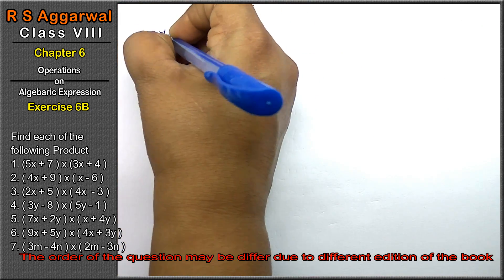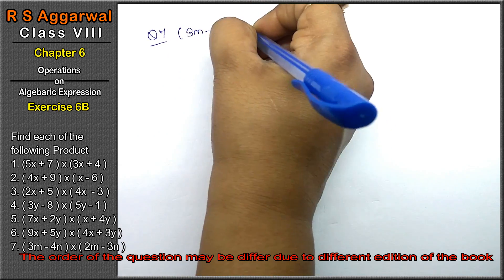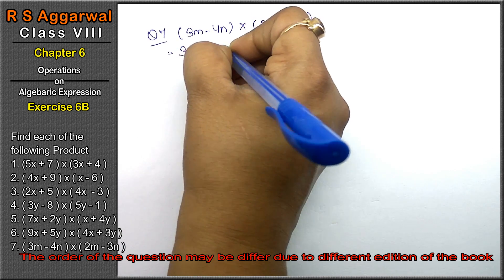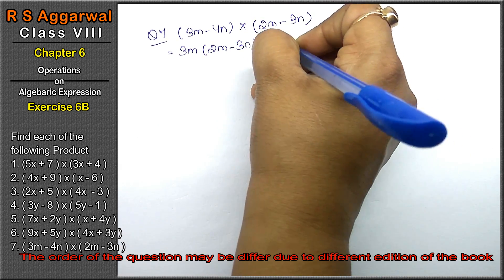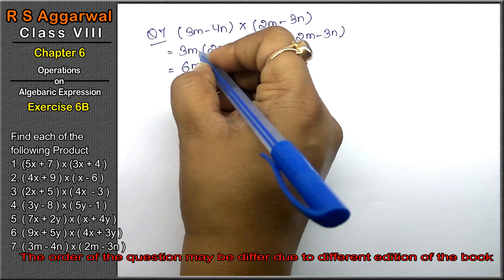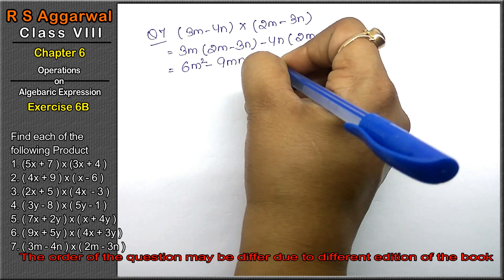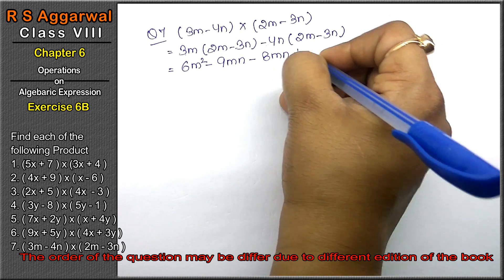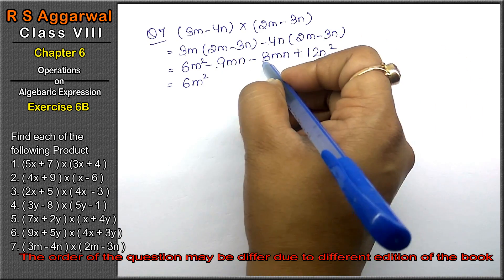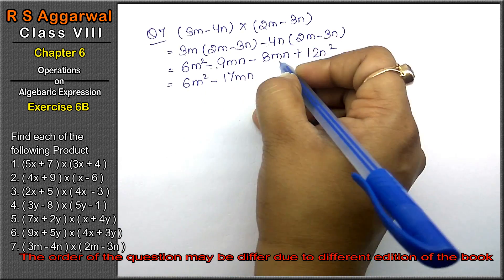Question number seven of Exercise 6B, that is algebraic expressions. Question number seven is (3m - 4n) multiplied by (2m - 3n). Equals: 3m multiplied by (2m - 3n), minus 4n multiplied by (2m - 3n). We get 6m squared, minus 9mn, minus 8mn, plus 12n squared.